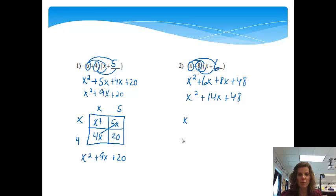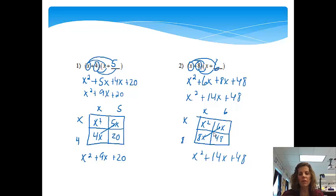And then my box method will have an x and an 8 and an x and a 6. Create my rectangle. x times x is x². x times 6 is 6x. 8 times x is 8x. And 8 times 6 is 48. I'll put my terms together. I'll have x² plus 6x plus 8x is 14x plus 48. Notice I got the same answer either way I did it.